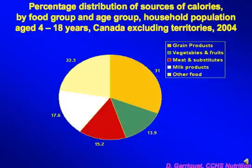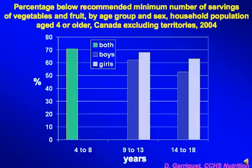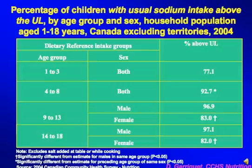If we look at indices of dietary quality — specifically the percentage breakdown of sources of calories from the Canadian Community Health Survey 2.2 — about a quarter of kids' caloric intake is coming from the 'other food' category, which is certainly not desired. About two-thirds of kids in the country are not getting the minimum number of servings of fruits and vegetables, and this is similar across all age groups. Using sodium intake as an indicator of dietary quality, virtually all age groups of kids are way beyond the upper limit of recommended sodium intake.